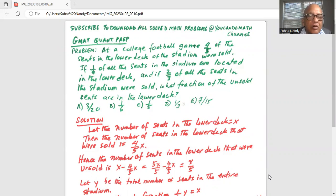If one-fourth of all the seats in the stadium are located in the lower deck and if two-thirds of all the seats in the stadium were sold, what fraction of unsold seats are in the lower deck?